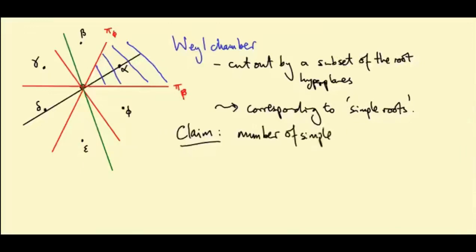So the number of simple roots is n. In this case, n is 2 because it's the plane. So there's two simple roots.